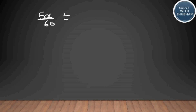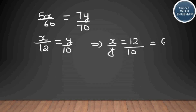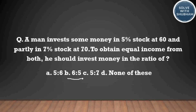Setting the two incomes equal: 5x/60 = 7y/70, which gives x/12 = y/10, so x:y = 12:10 = 6:5. To obtain equal income he should invest money in the ratio of 6 to 5. The answer is option B. You just need to understand the terminologies — what 5 percent means, what the market value is, and how to deduce the dividend to get the answer.